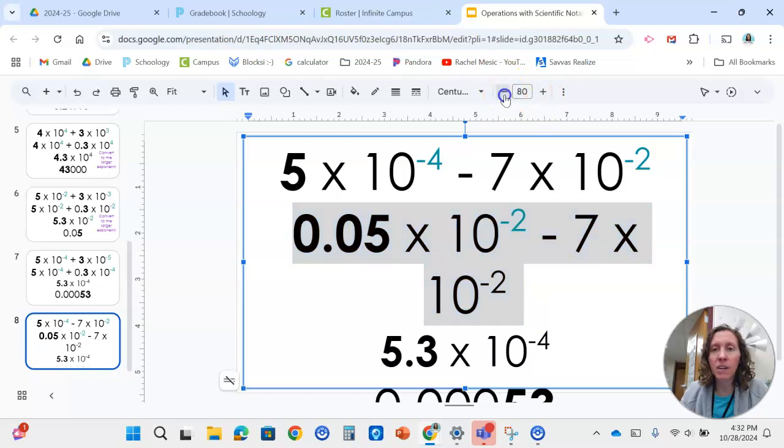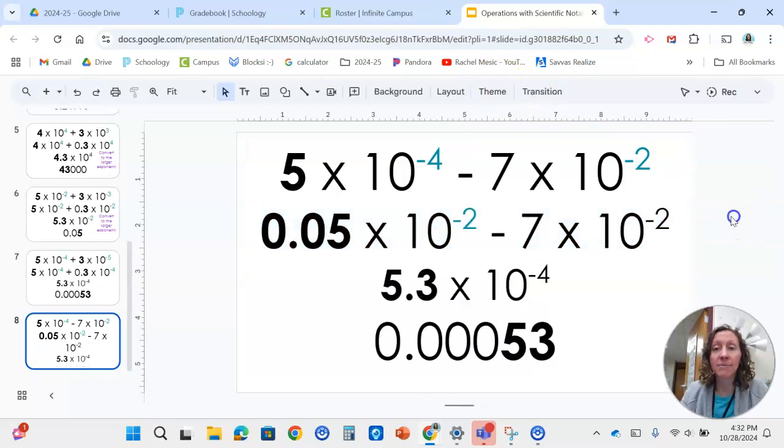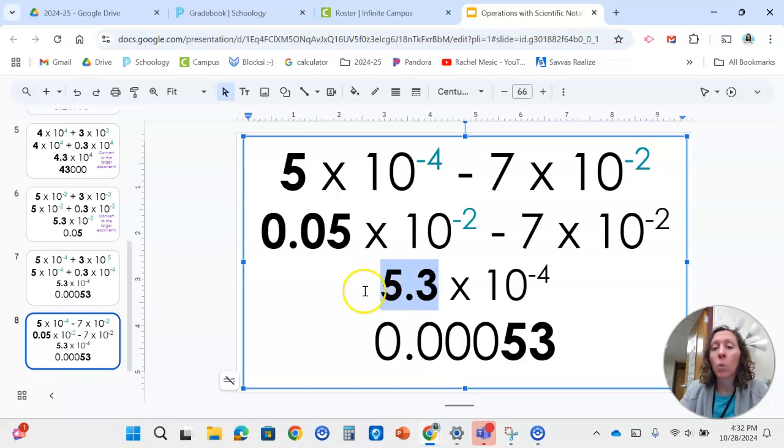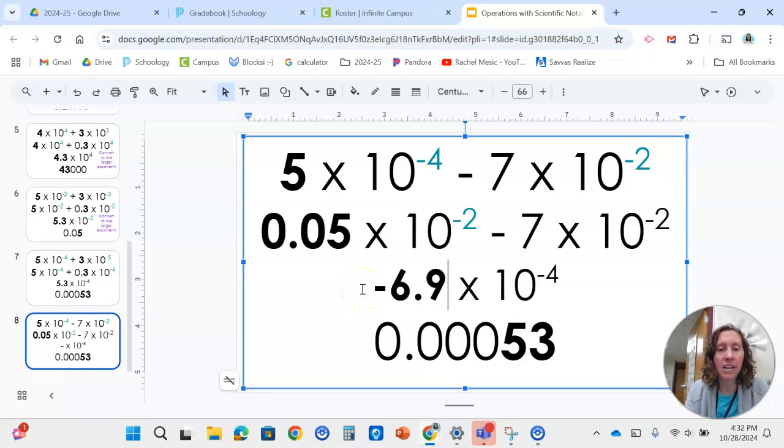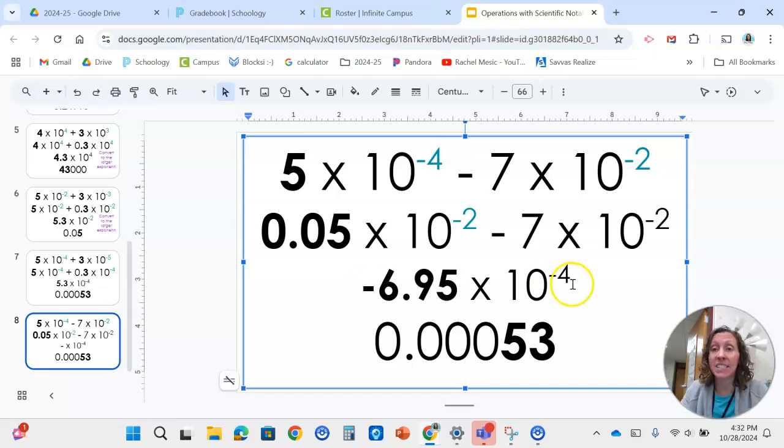So now we'd have to do 0.05 minus 7. Let's say we have five cents and we try to spend seven dollars. We're going to be in debt, six dollars and 95 cents. And we have to keep the same exponent of negative 2.